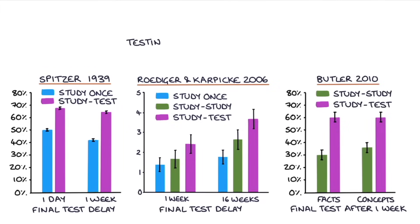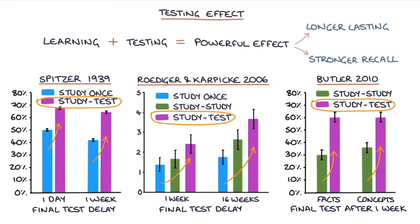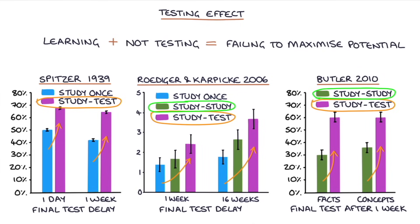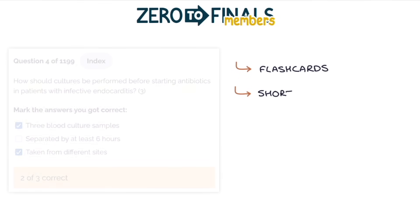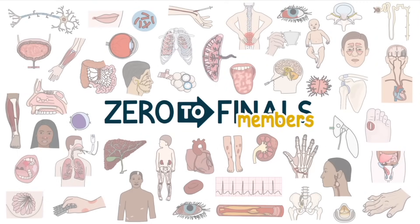Research has consistently shown that testing yourself after learning a topic has a powerful effect on how long you retain that information — known as the testing effect. Studying and then testing yourself results in longer lasting and stronger recall, even compared with additional study sessions. The Zero to Finals member site contains flashcards, short answer questions, multiple choice questions, and extended matching questions purpose-built to supplement the Zero to Finals content, helping you build your knowledge base and take advantage of the testing effect.